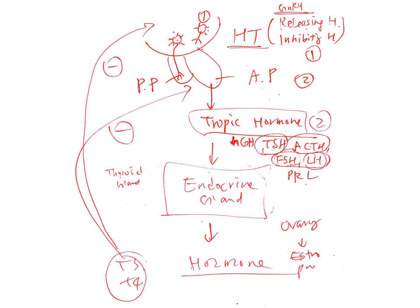Releasing and inhibiting hormones from the hypothalamus act on the endocrine cells of the anterior pituitary, which release trophic hormones such as growth hormone, TSH, ACTH, FSH, LH, and prolactin. These hormones go to target endocrine glands or target organs to produce their specific hormones. Blood concentrations of those hormones negatively modulate the activity of hypothalamus neurons and anterior pituitary cells, so that just enough hormone is produced.